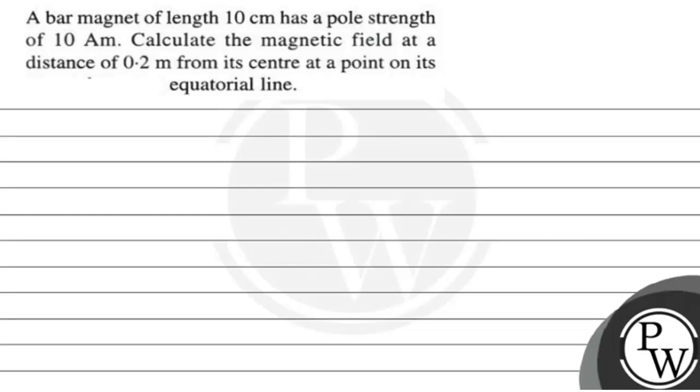Hello, let's read the question. The question says a bar magnet of length 10 centimeter has a pole strength of 10 ampere meter. Calculate the magnetic field at a distance of 0.2 meter from its center at a point on its equatorial line.